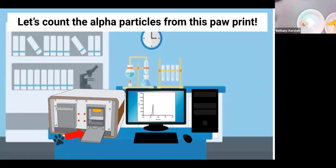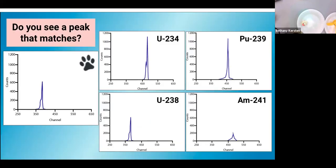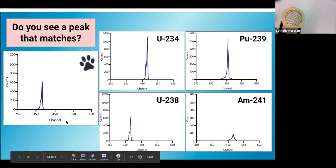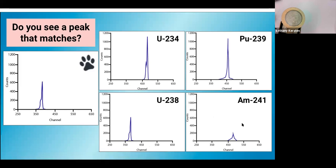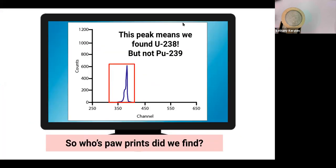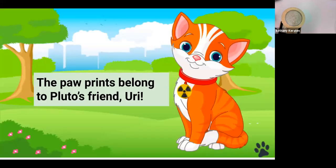Let's start with the paw print because dogs have paws. So do you see a peak that matches the paw print? That's correct. Someone's saying U-238. Yeah, so as you said, uranium-238 or U-238 matches the paw print. And we are looking for plutonium-239. But whose paw print did we find? We found the paw print of Yuri, Pluto's friend. She's a cat.